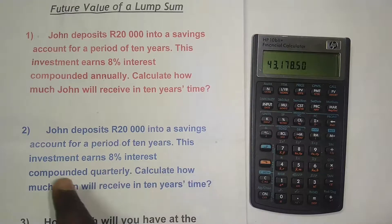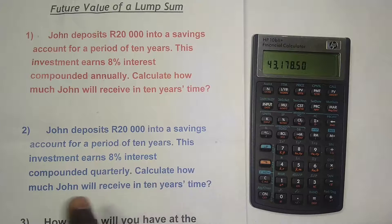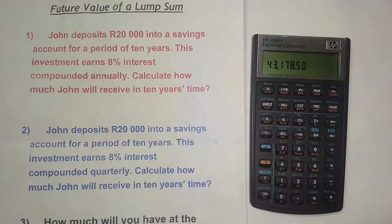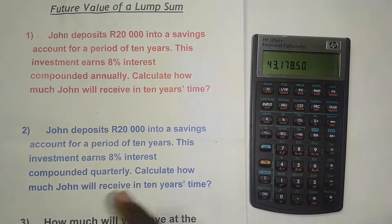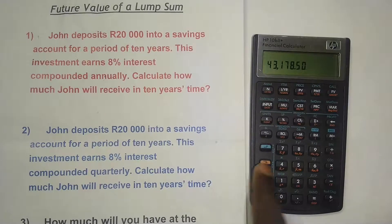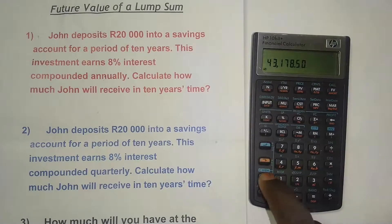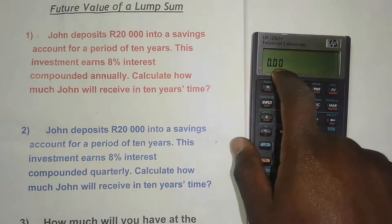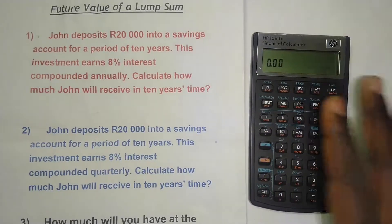Now the second example: John deposits 20,000 rand into a savings account for a period of 10 years. This investment earns 8% interest compounded quarterly. Calculate how much he will receive in 10 years time. This time it's compounded quarterly, not annually, so I need to change the compounding again. Press the orange button and C — you can see it's currently 1 per year. I need to change it to 4 times per year.